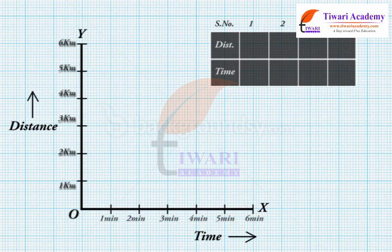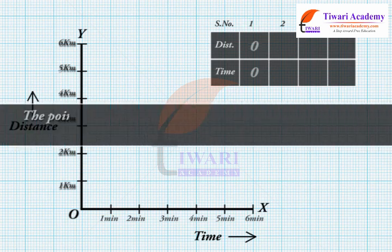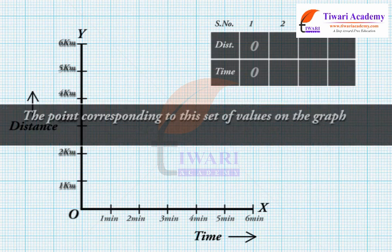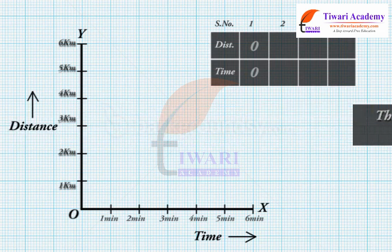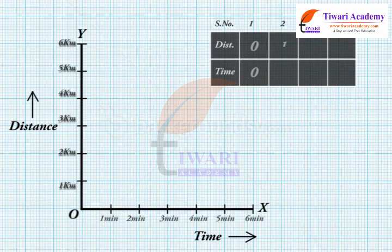Now mark the points on the graph paper to represent each set of values for distance and time. The first observation shows that at time zero minutes, the distance moved is also zero, so the point corresponding to this set of values is the origin itself. After one minute, the car has moved a distance of one kilometer.